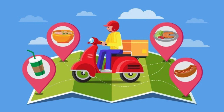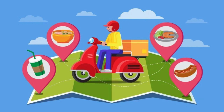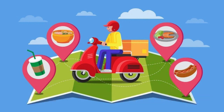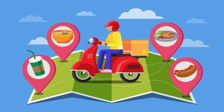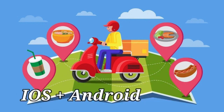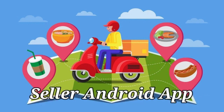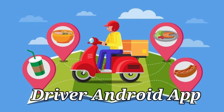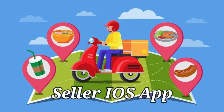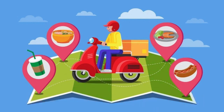Food Onyx is a complete multi-vendor food delivery application combo. If you buy the Android combo, you get the website, customer Android app, driver Android app, seller Android app, admin panel, complete source code, and one year of free technical support. If you buy the Android and iOS combo, you get the website, Android and iOS apps for customer, seller, and driver, complete source codes, and one year of free technical support.